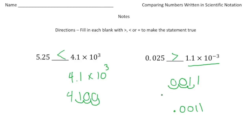The secret to doing these problems is to take the numbers written in scientific notation, convert them to standard form, and then you can make the comparison. Why don't you pause the video and try the Your Turn Now problems. When you're done, hit play and you can see how you did.